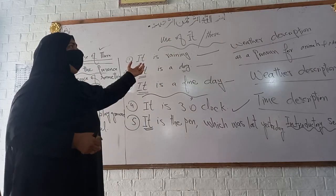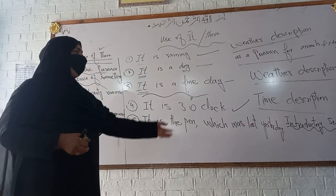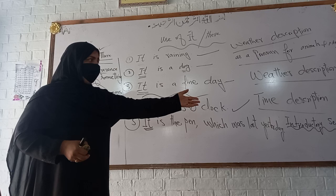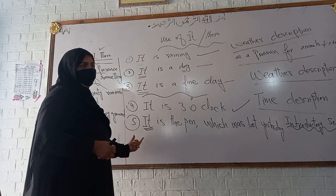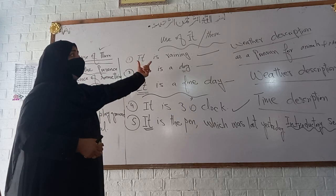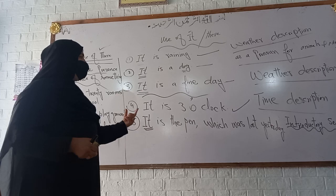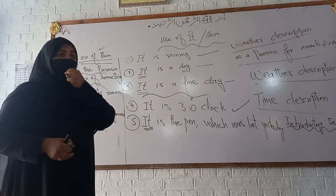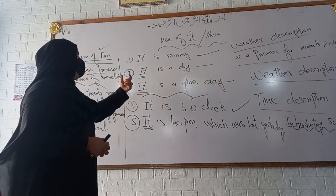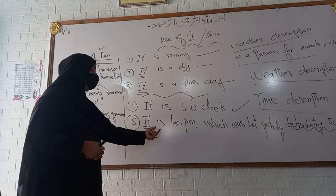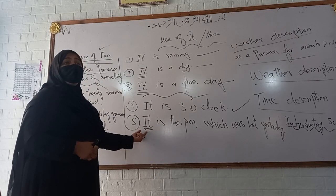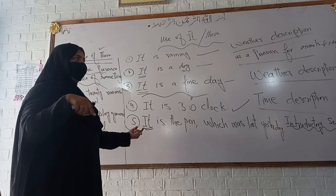We can use it as well as there. For weather description, time description, introductory sentences, and for animals or non-living things, we use it. For example: it is raining — weather description. It is very hot today. It is a fine day. It is a dog. It is a pen. And for introductory sentences to put stress: it is the pen which was lost yesterday.